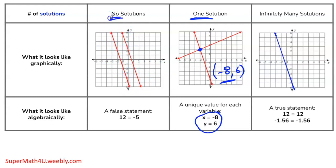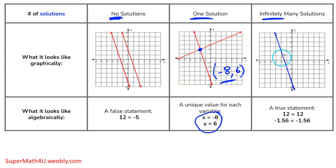If the two lines are not intersecting — not touching at all — then there's no solution. The number of solutions equals the number of points the lines are touching. Lines that don't touch are parallel lines, which means they have the same slope. For infinite many solutions, one line is drawn on top of the other, so they touch at infinitely many points.